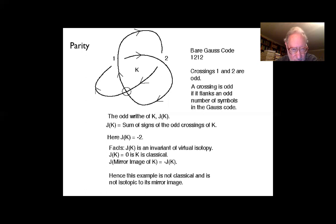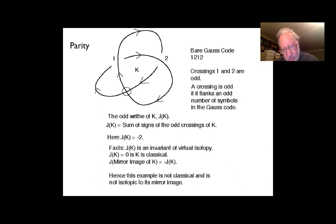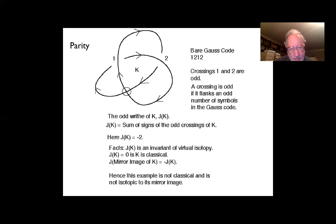One can define the odd writhe of the knot as the sum of the signs of the odd crossings. In this knot the signs happen to be negative; switching the crossing makes them positive, corresponding to a right-hand-rule mnemonic. The odd writhe is invariant under virtual isotopy, is zero for classical knots, and negates under the mirror image. Our little calculation shows J of K equals minus two, proving this is a chiral virtual knot that cannot be equivalent to a classical knot.